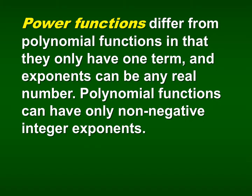If you have c times x to the nth power plus something, you no longer have a power function — you have a polynomial. Also, polynomial functions could only have non-negative integers, whereas power functions can include negative numbers and fractions. That's how they're different from polynomials.